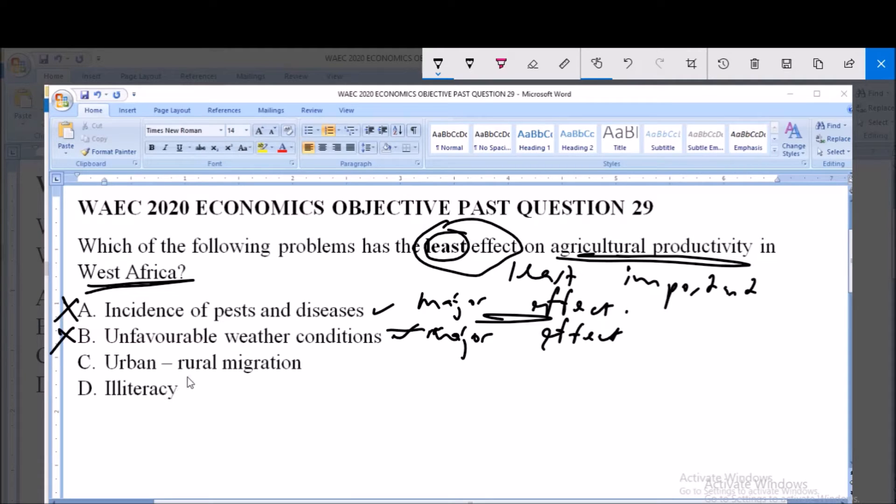Now option C says urban rural migration. Urban rural migration refers to the movement of people from urban regions to rural regions. Now if we think of this, this does not really affect agricultural productivity majorly because when people move from urban regions to rural regions,